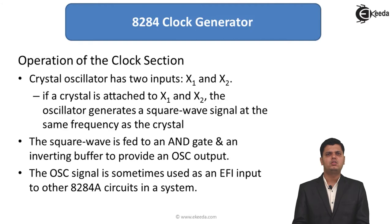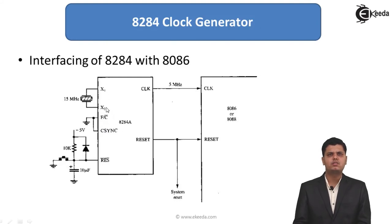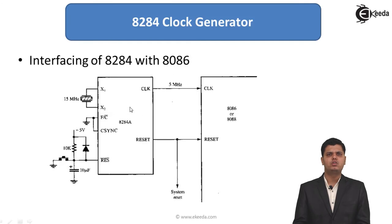Looking at the 8284 interfacing diagram: the x1 and x2 pins are connected to an external crystal of 15 MHz, and from this the clock is sent out at 5 MHz frequency. As you can see, the frequency is divided by 3, as discussed in the pin diagram, so 15 MHz is converted into 5 MHz.